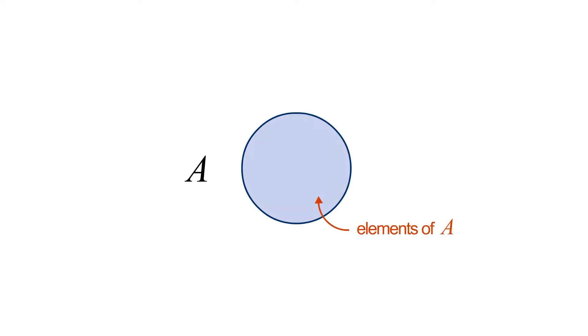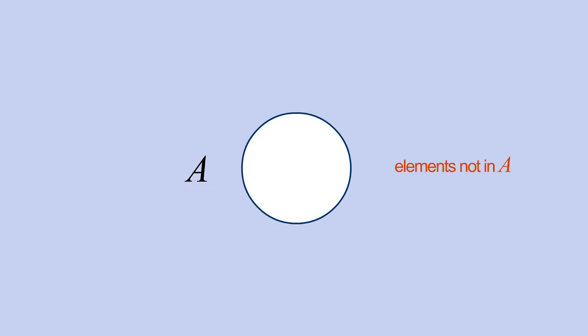In a Venn diagram, sets are usually represented by circles or other types of enclosed areas. The interior of the circle represents all the elements of the set, while the exterior represents any elements that are not members of the set. For instance, let's say that we have two sets, A and B.